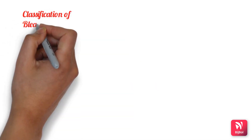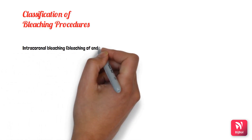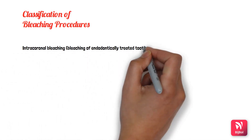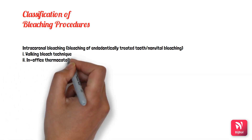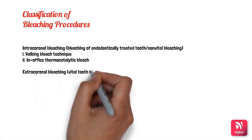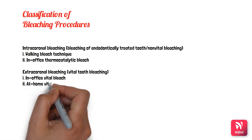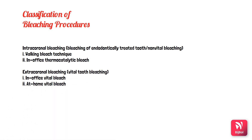Coming to the classification of bleaching procedures, we have non-vital intracoronal bleaching, which includes in-office thermocatalytic bleaching and the walking bleach technique. Next is vital extracoronal bleaching, which includes in-office thermocatalytic bleaching, in-office power bleaching, in-office bleaching for fluorosed teeth, and at-home vital bleaching.